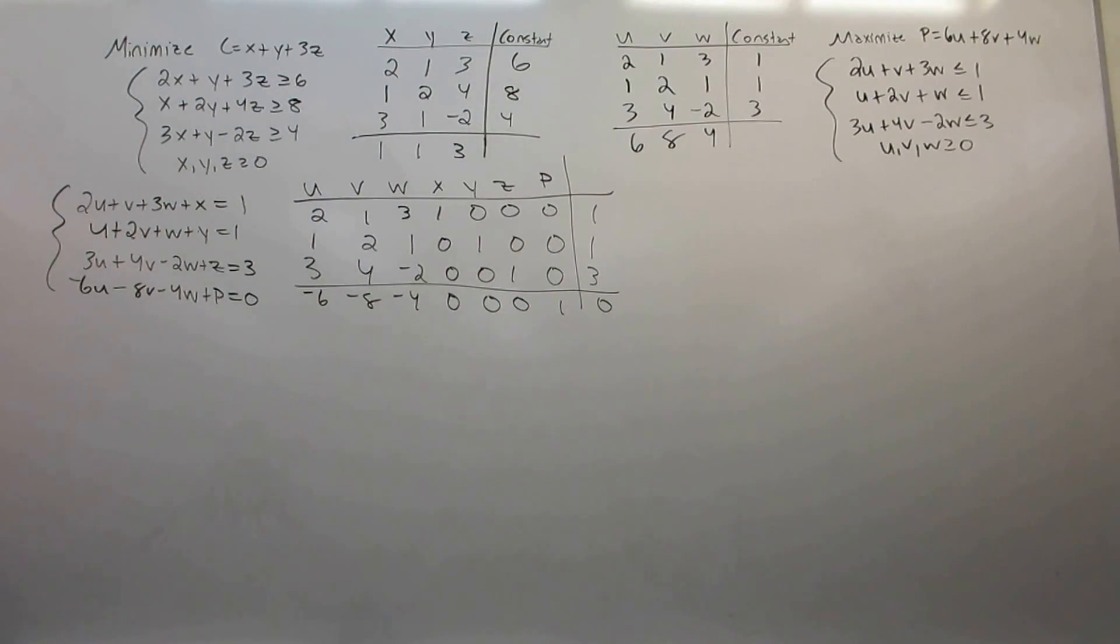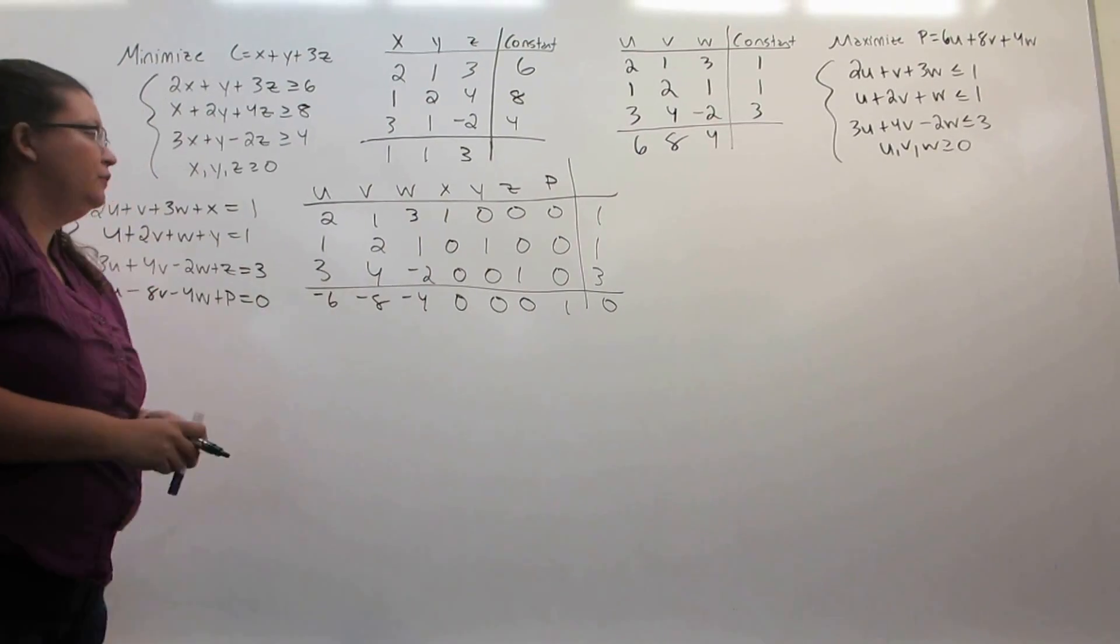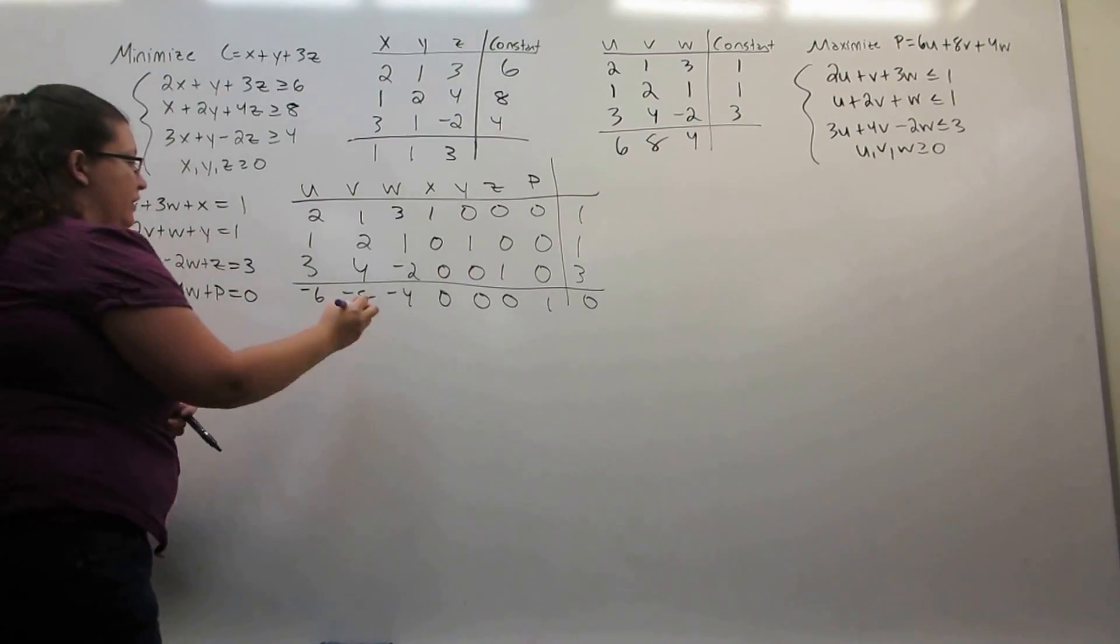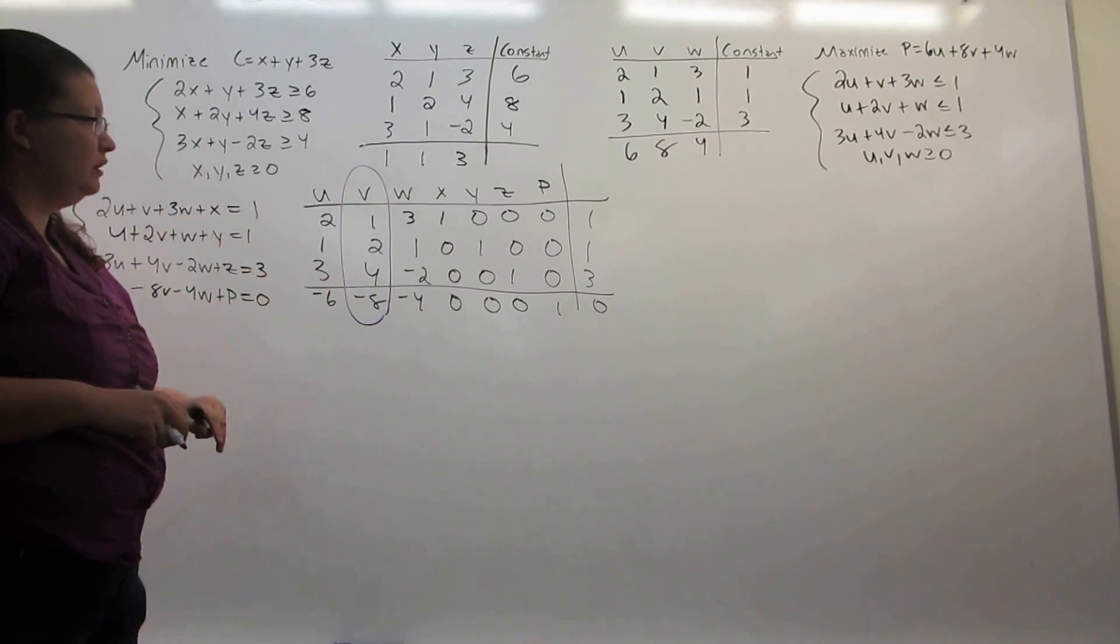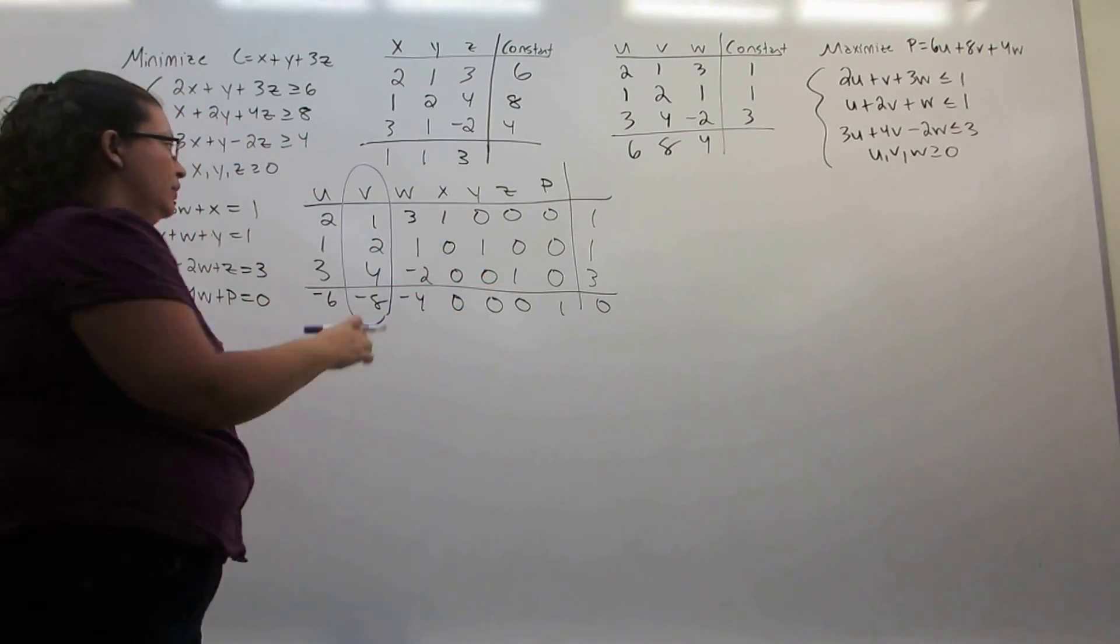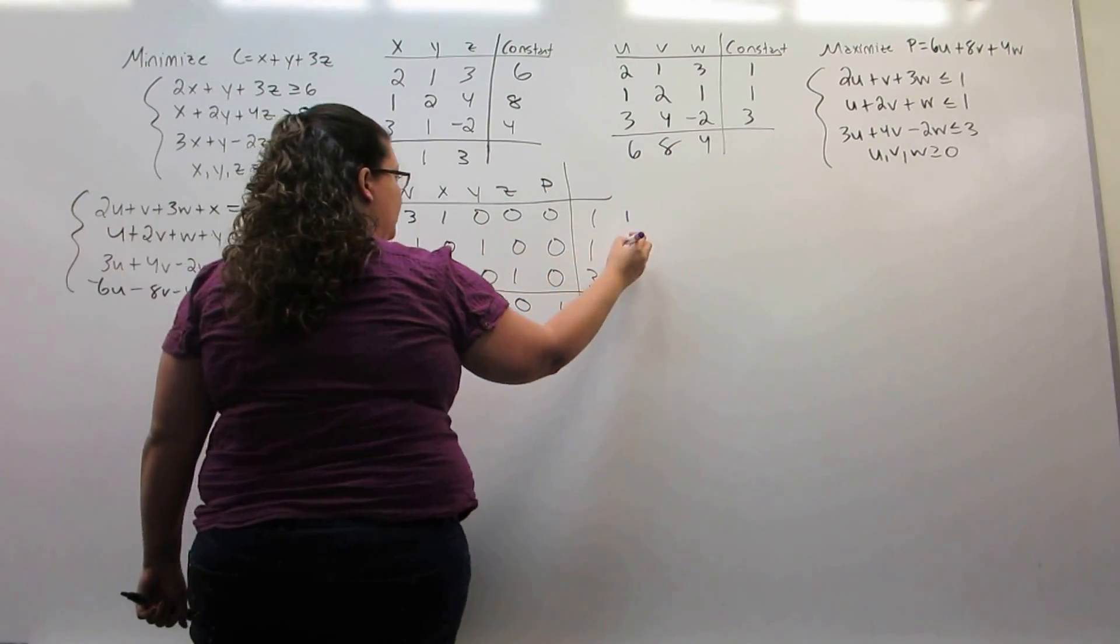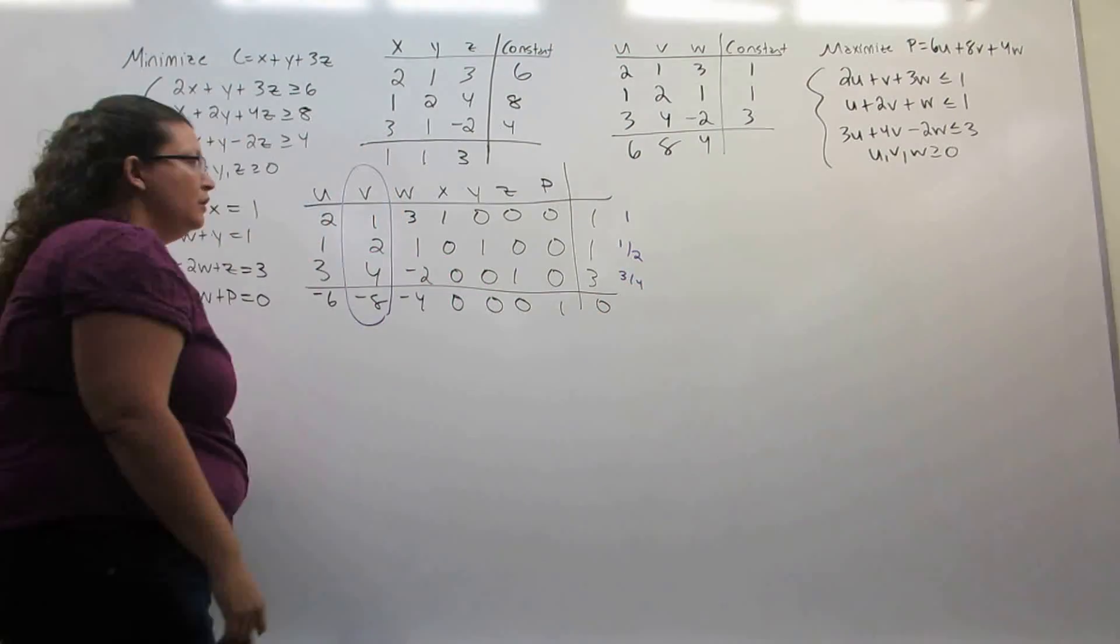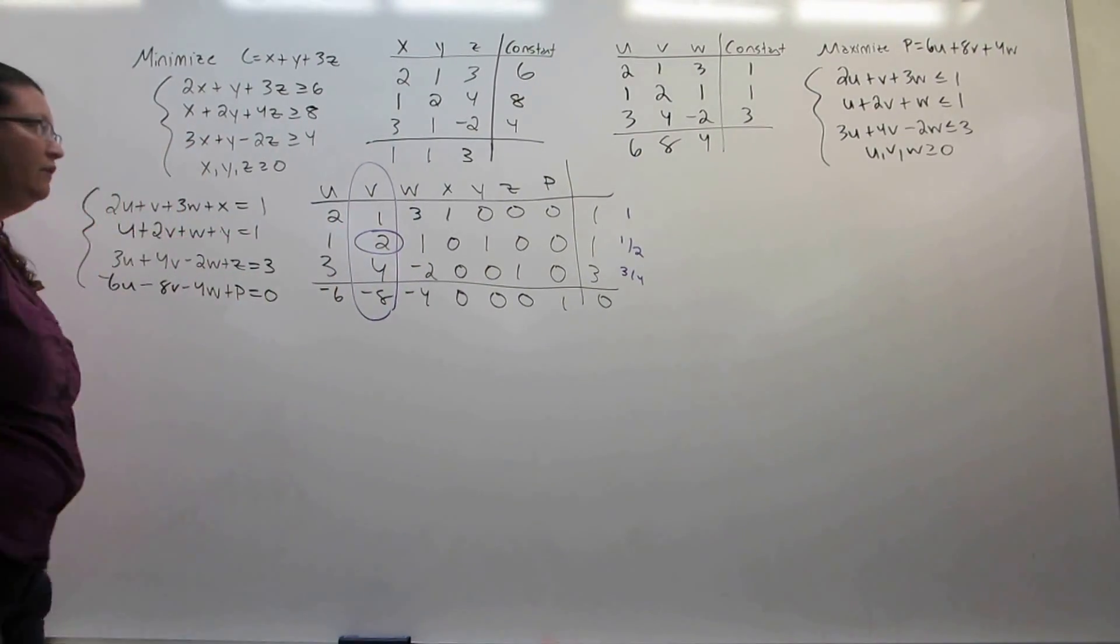All right. Now we are ready to start solving this using the simplex method. The first step is to find our pivot position. We pick the column with the largest negative number. Then we take the entries in the column and divide them into the entries in our constant column. So 1 into 1 gives 1, 2 into 1 gives a half, 4 into 3 gives 3 fourths. We pick the smallest of those and that will pick out our pivot position.